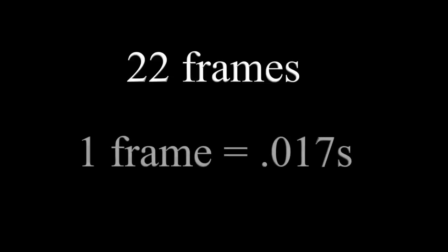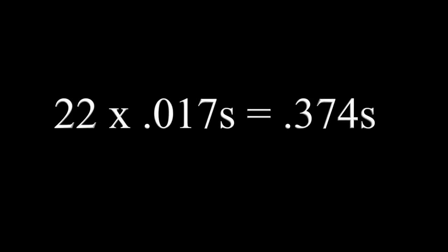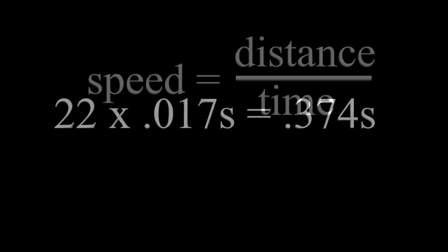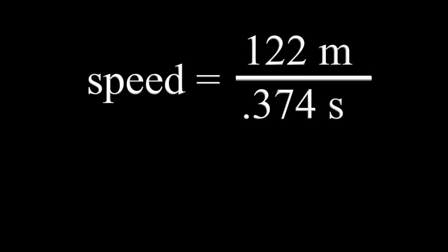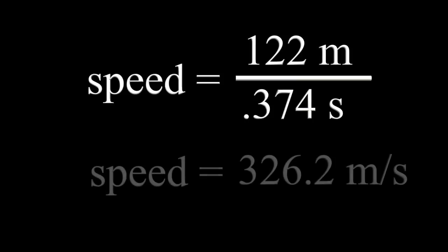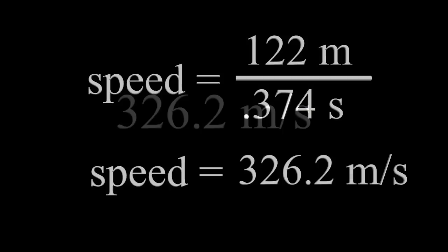Each frame represents 0.017 seconds. So 22 times 0.017 gives us an elapsed time of 0.374 seconds. To calculate the speed of sound, we divide the distance the sound traveled — 122 meters — by the time, 0.374 seconds. This gives us a result for the speed of sound of 326.2 meters per second.